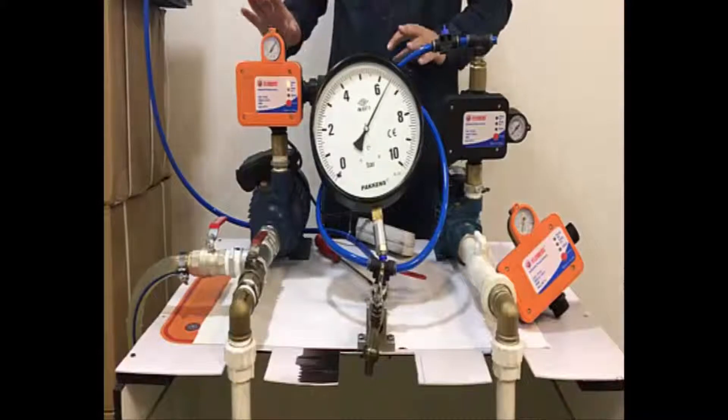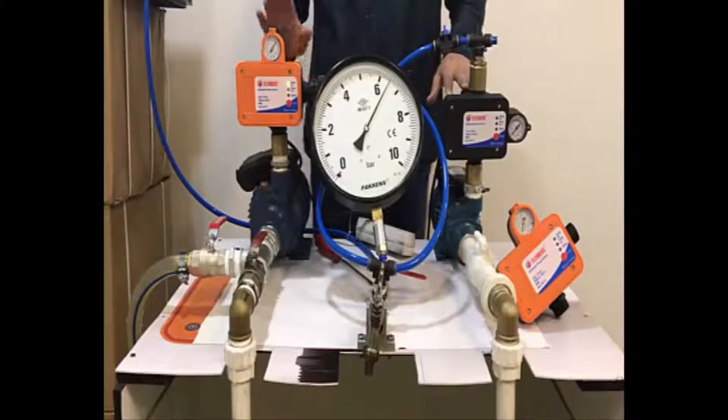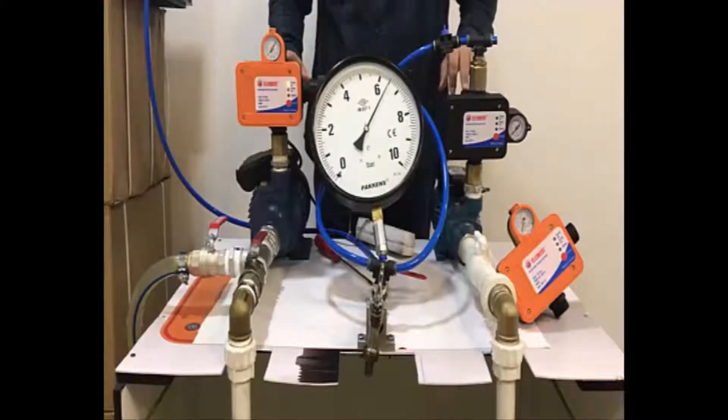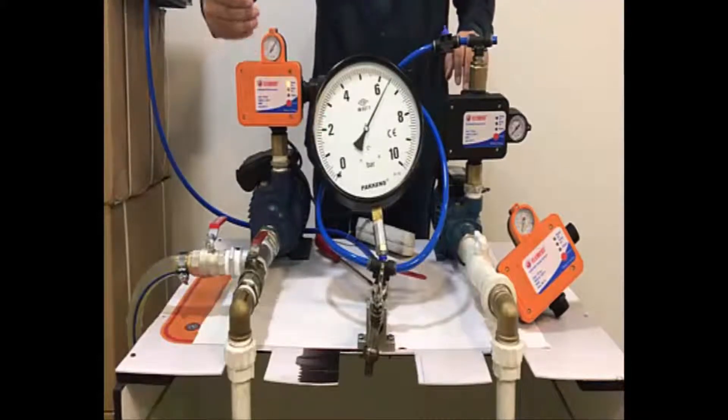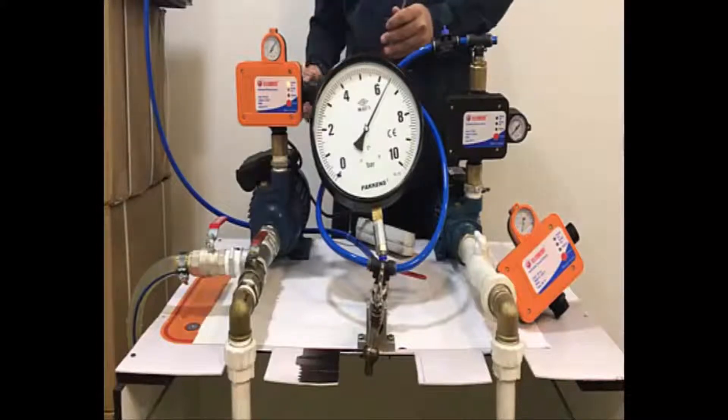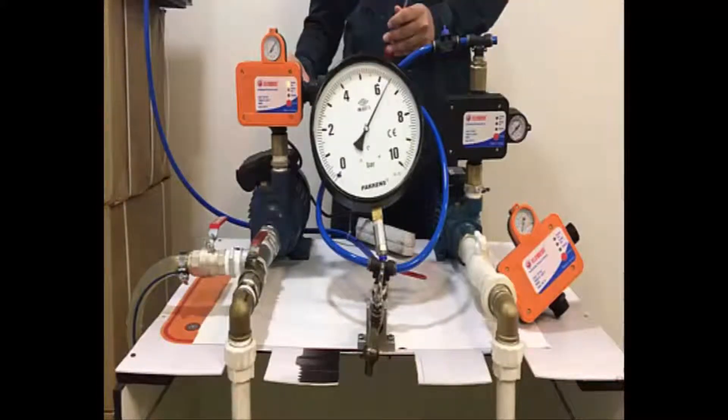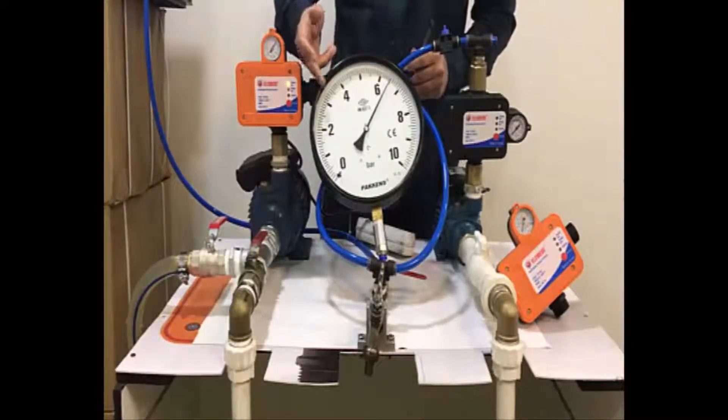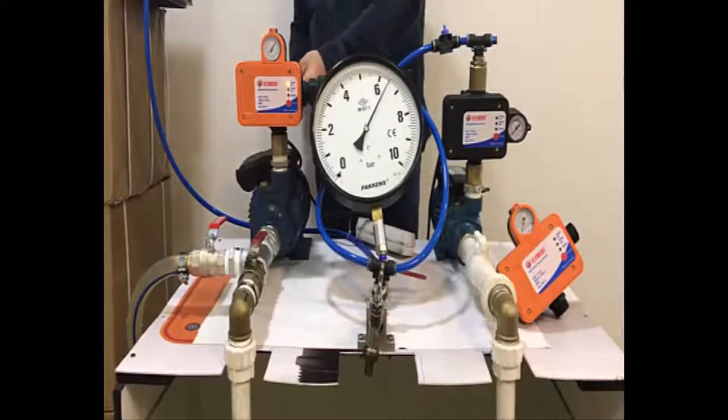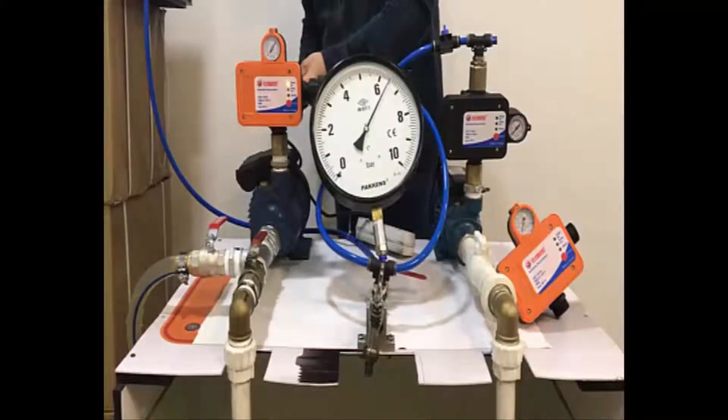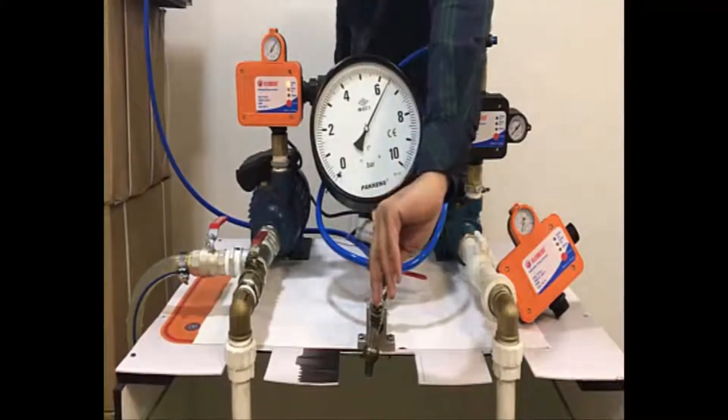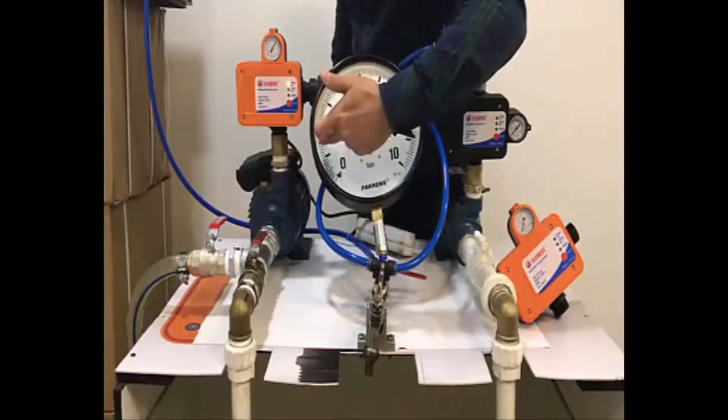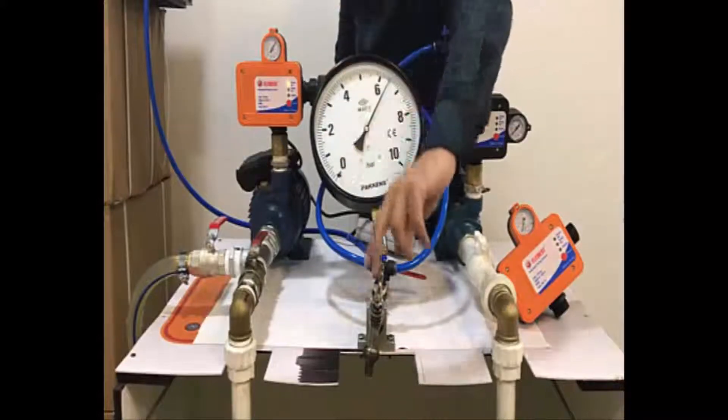And now our device is ready for daily use. But if we want to adjust the pressure level of the start of the device, we have to screw the screw to the right side again in order to increase it. For example, I will switch a few cycles more. And I will open the exit valve, you will see the minimum pressure, and then it will start again.